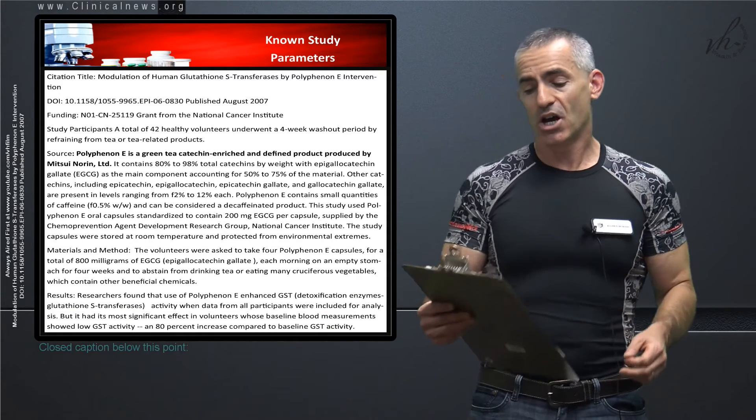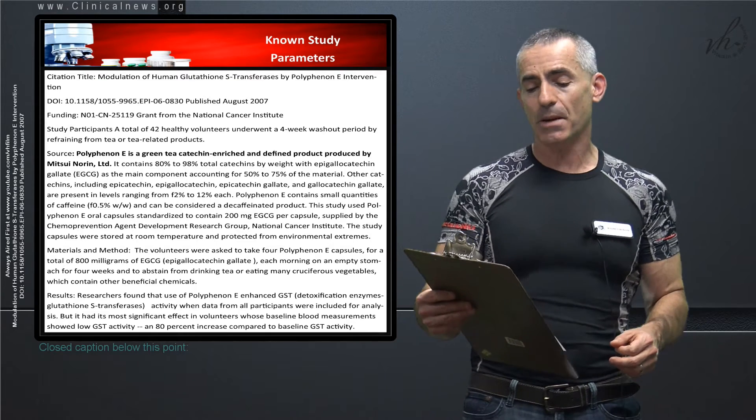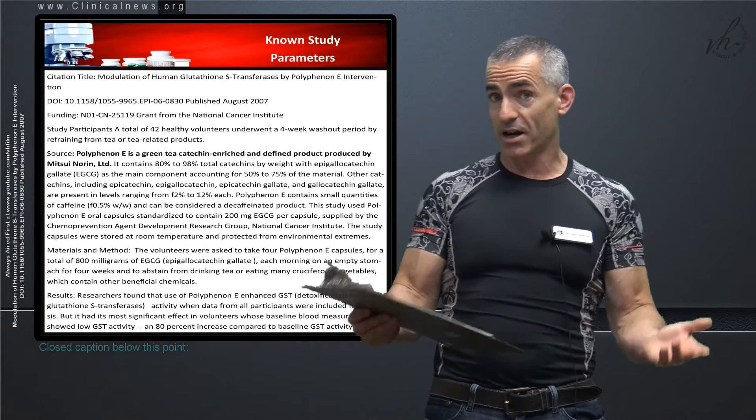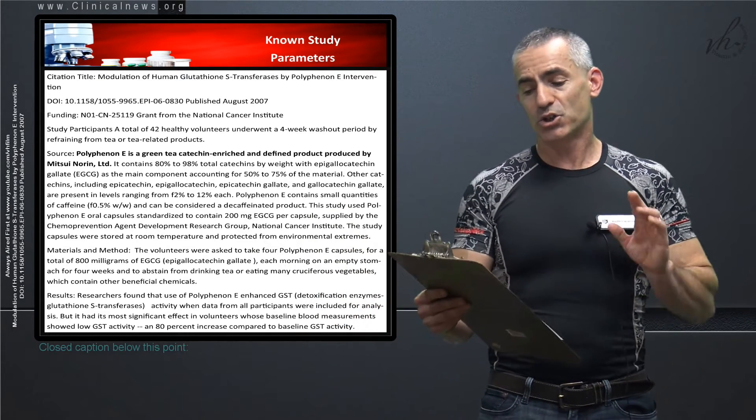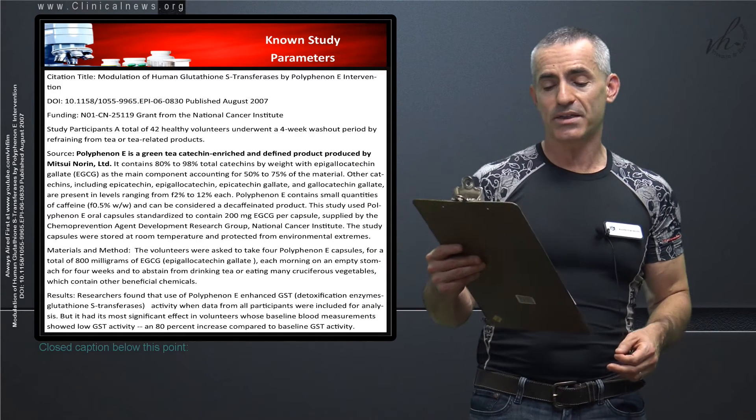Study participants. A total of 42 healthy volunteers underwent a four week washout period by refraining from tea or tea related products. You don't want to mess with the study. The source of polyphenol E is as follows. You can read right there.